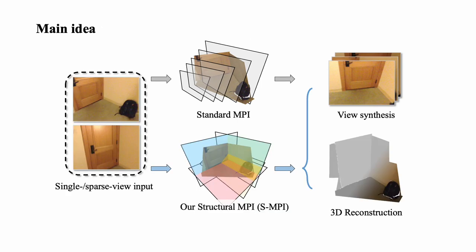The essential reason causing the above issues is that the MPI construction is dependent on source views but neglects the explicit 3D geometry of the scenes. So we propose to construct MPIs adaptive to the scenes, considering both plane depths and orientations, called structural MPI.